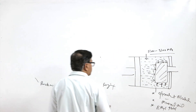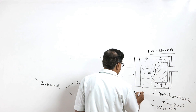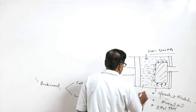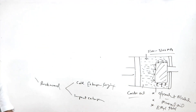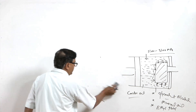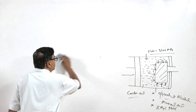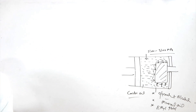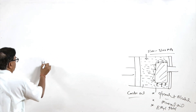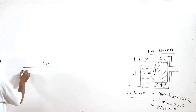With regard to the pressure requirements for hot and cold extrusion — for hot extrusion, for lead it may vary from 275 to 400 MPa.